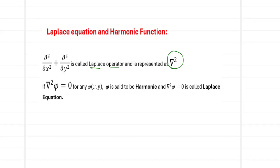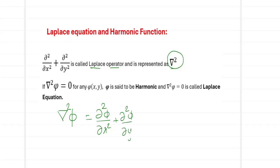Now if you give an input φ(x, y) to the Laplace operator, it will generate the quantity ∂²φ/∂x² + ∂²φ/∂y². If this quantity is equated to zero, that is if ∇²φ = 0, this equation is referred to by the name Laplace equation.